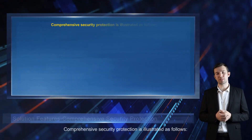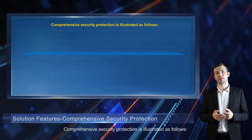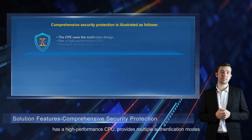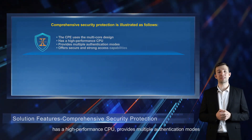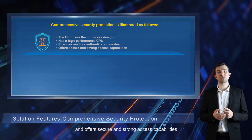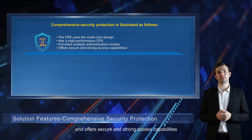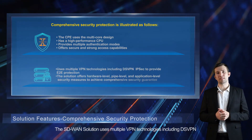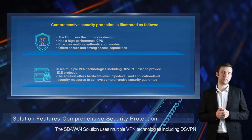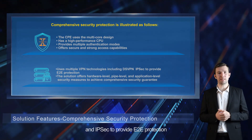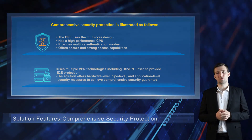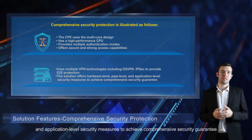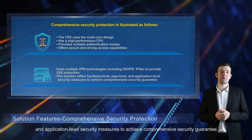Comprehensive security protection is illustrated as follows. The CPE uses the multi-core design, has a high-performance CPU, provides multiple authentication modes, and offers secure and strong access capabilities. The SD-WAN solution uses multiple VPN technologies, including DSVPN and IPSec, to provide E2E protection. The solution offers hardware-level, pipe-level, and application-level security measures to achieve comprehensive security guarantee.